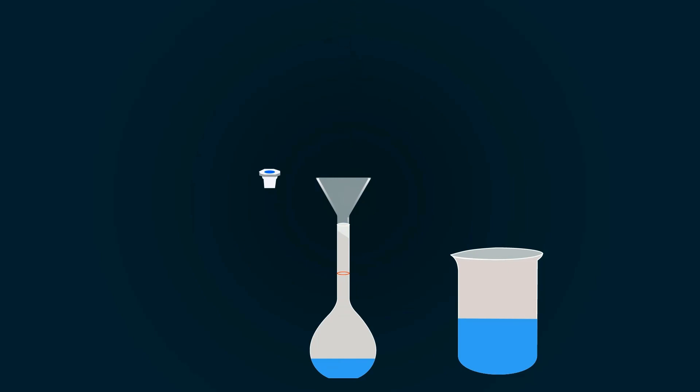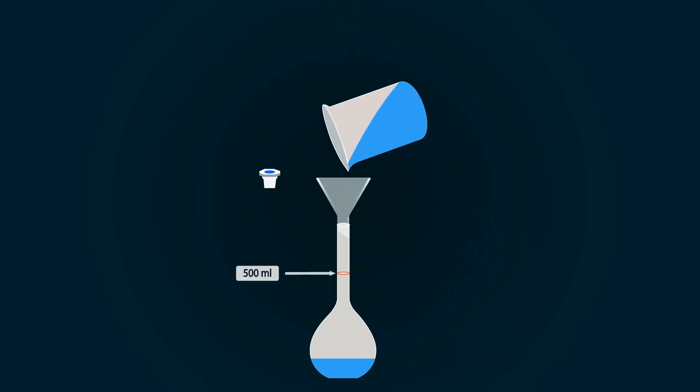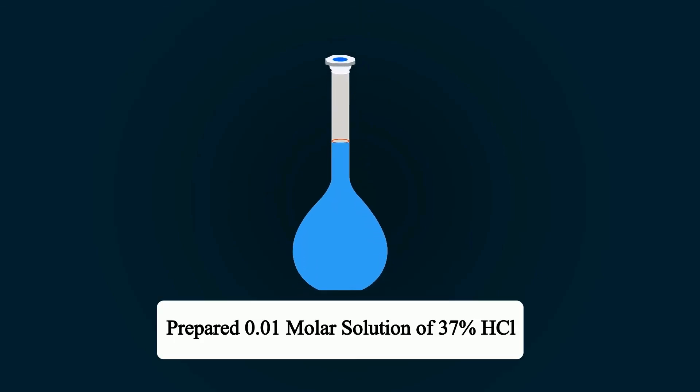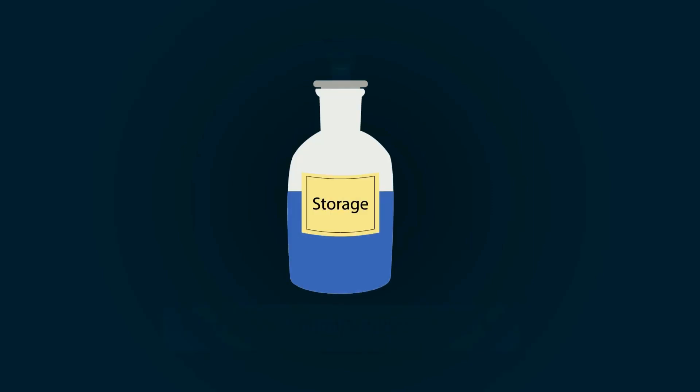Now fill the distilled water up to the 500 ml mark. You have successfully prepared 0.01 molar solution of 37% HCl. You can store it in any bottle you want. Thank you.